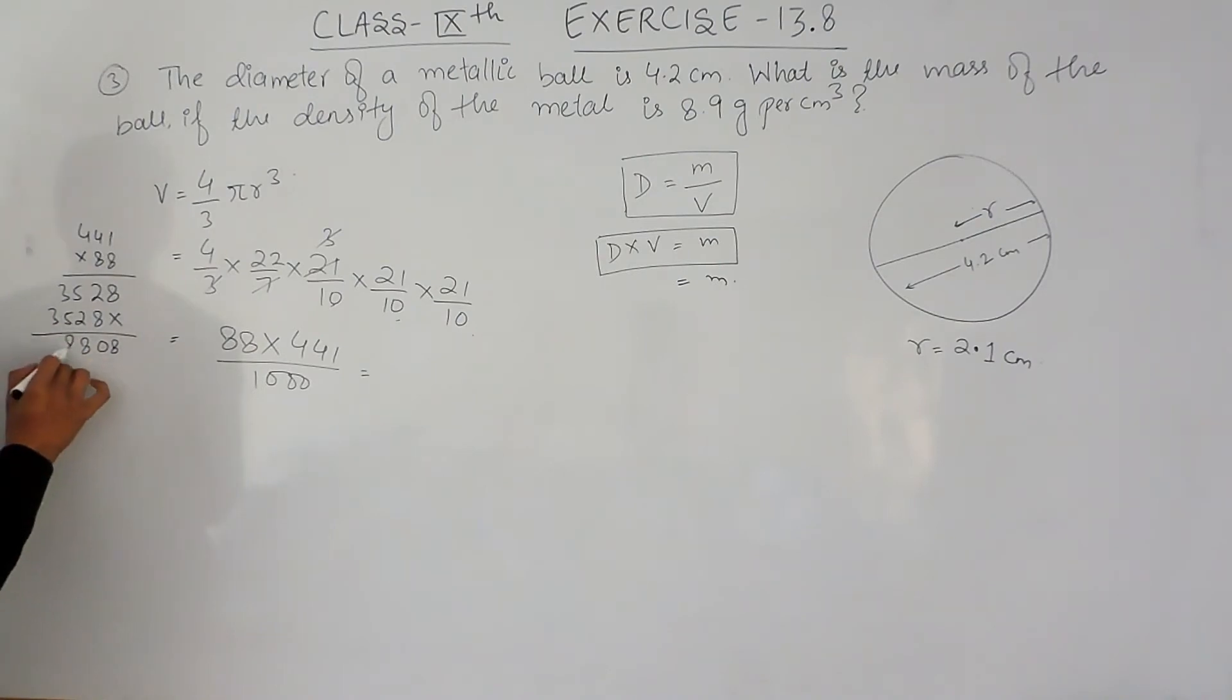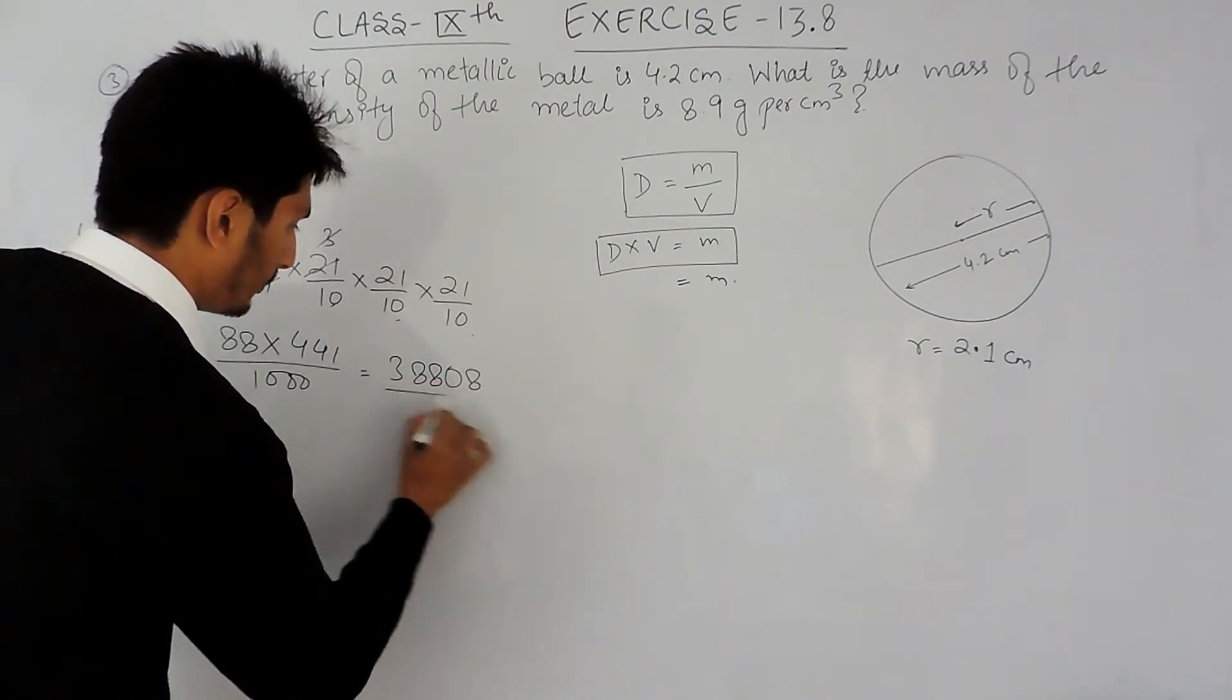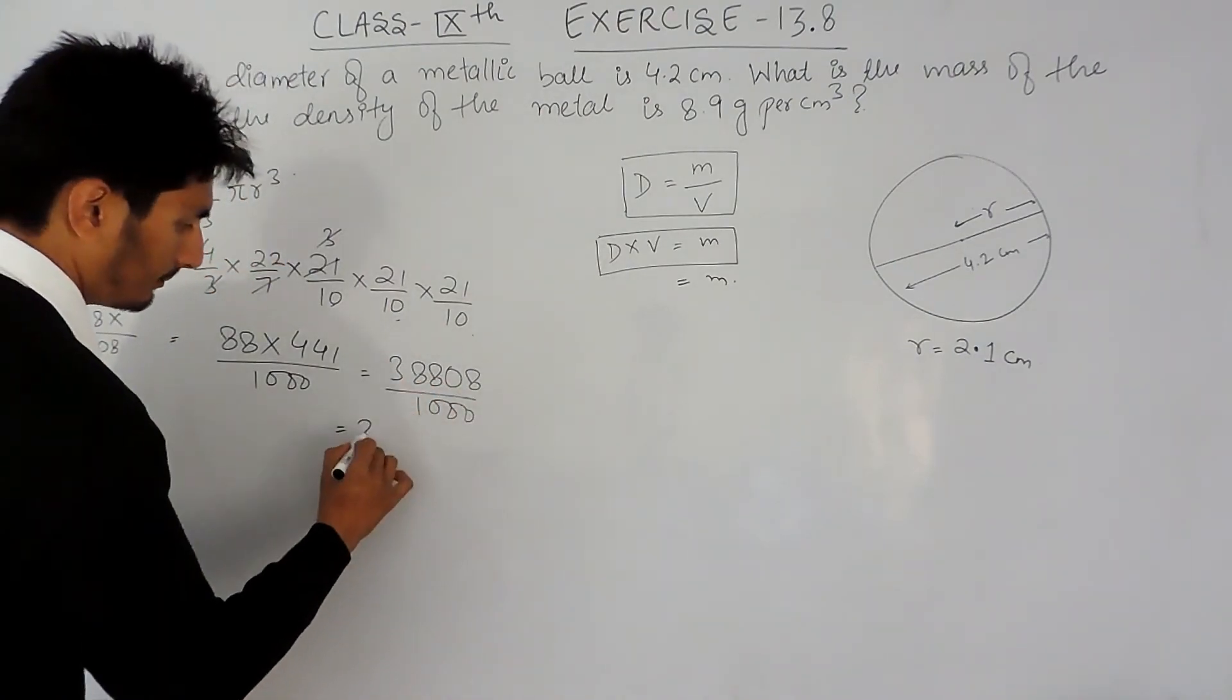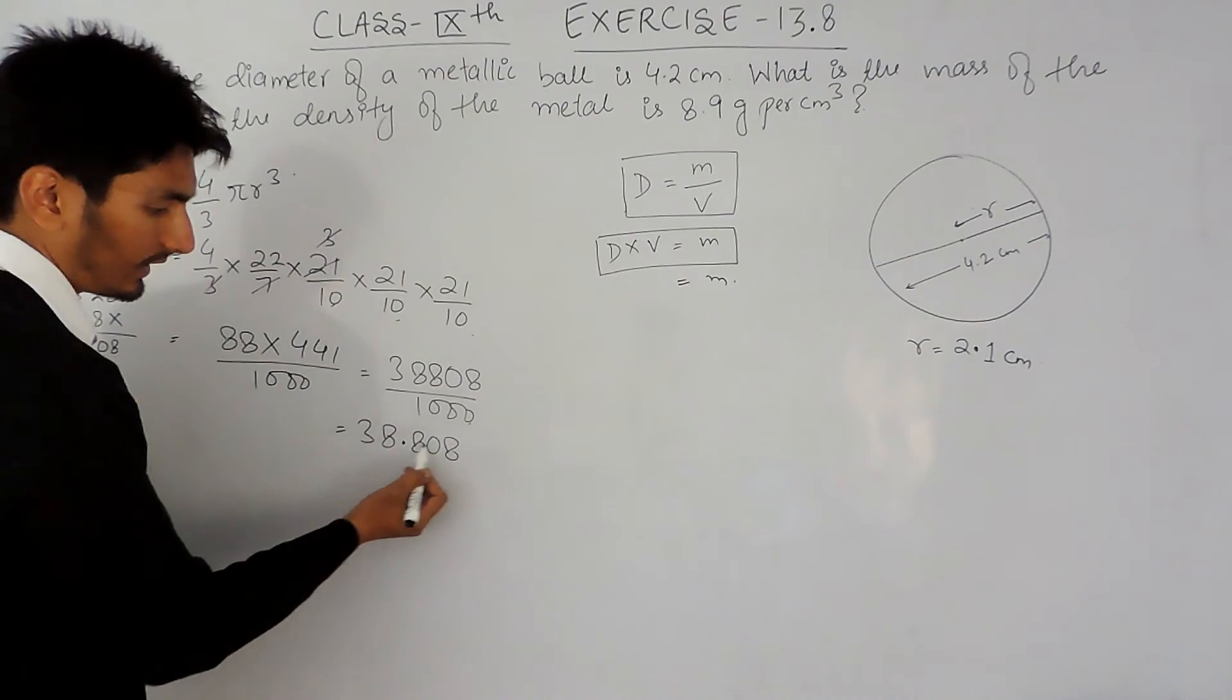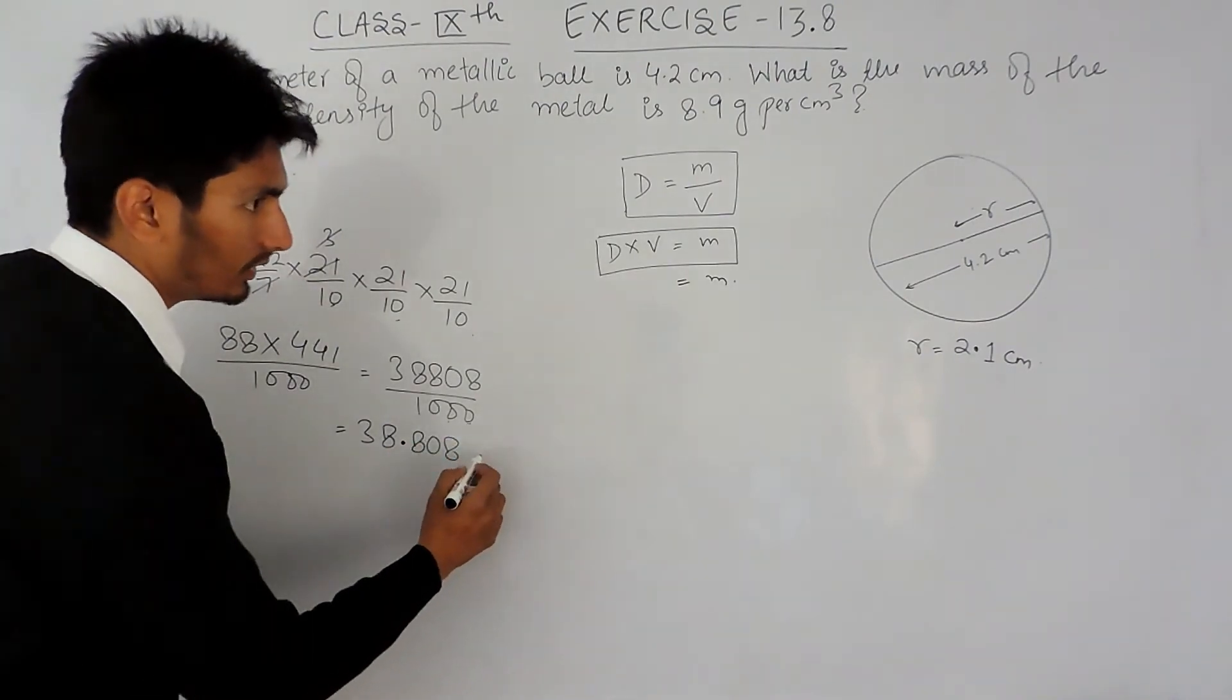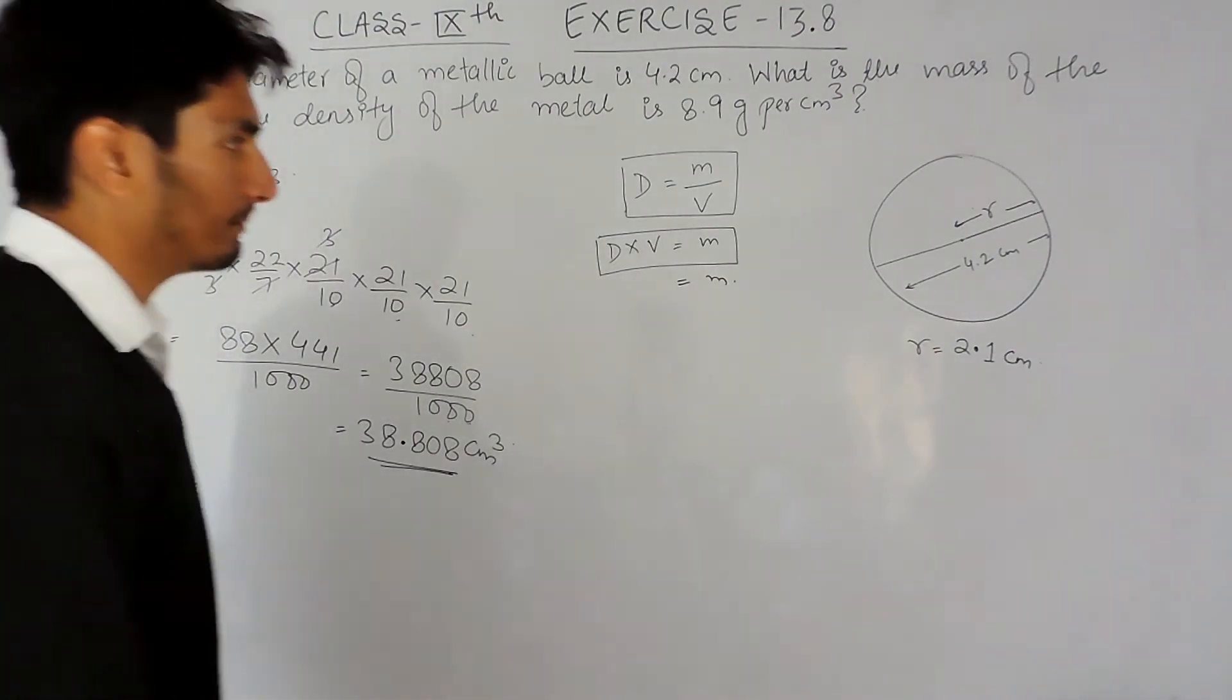It should be 8 and it should be 3, so it should be 38,808 upon thousand. So I can place, after counting 3 from my right hand side, a decimal here because there are 3 zeros in the denominator. So 38.808 centimeter cube will be the volume of this metallic ball.